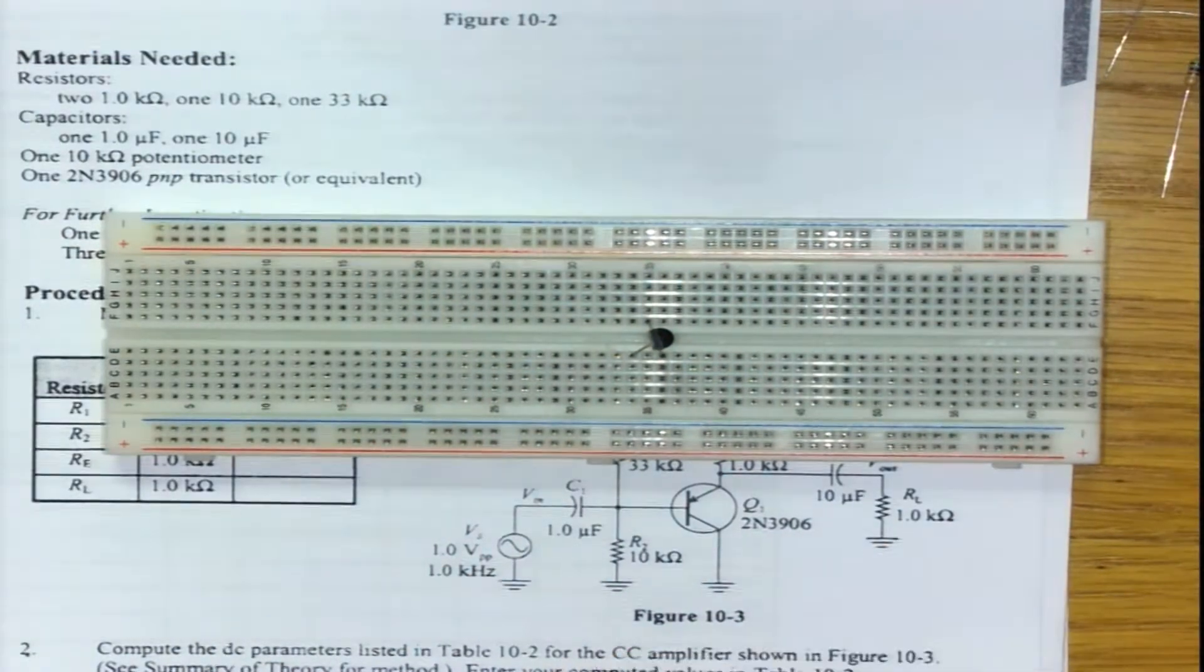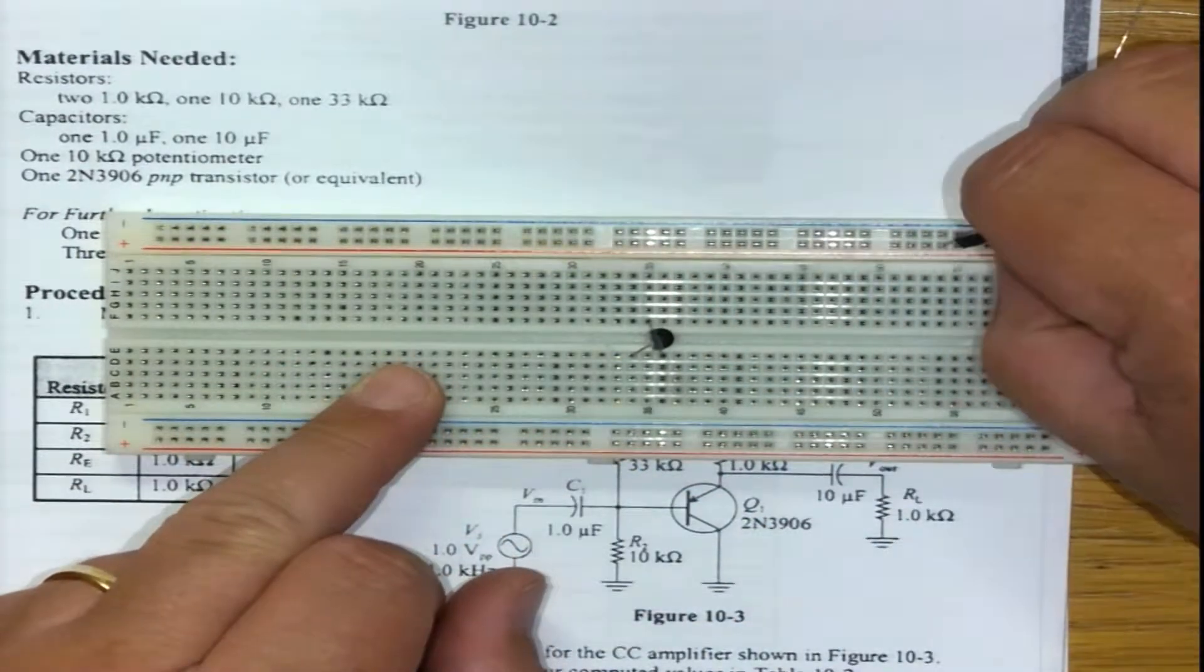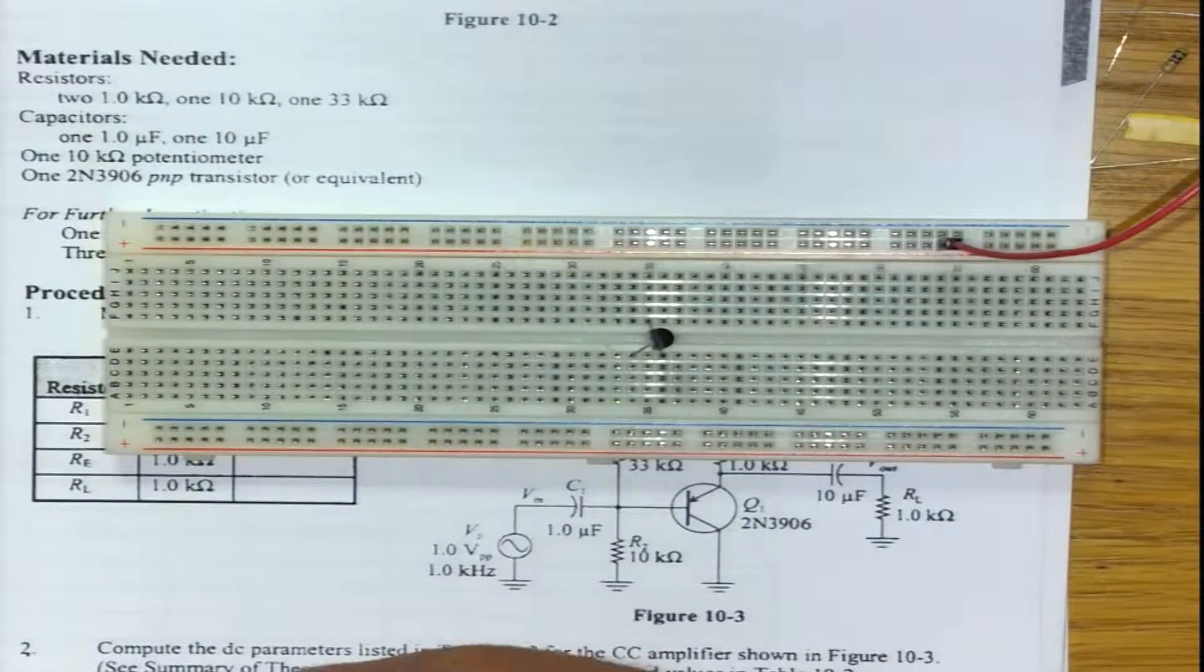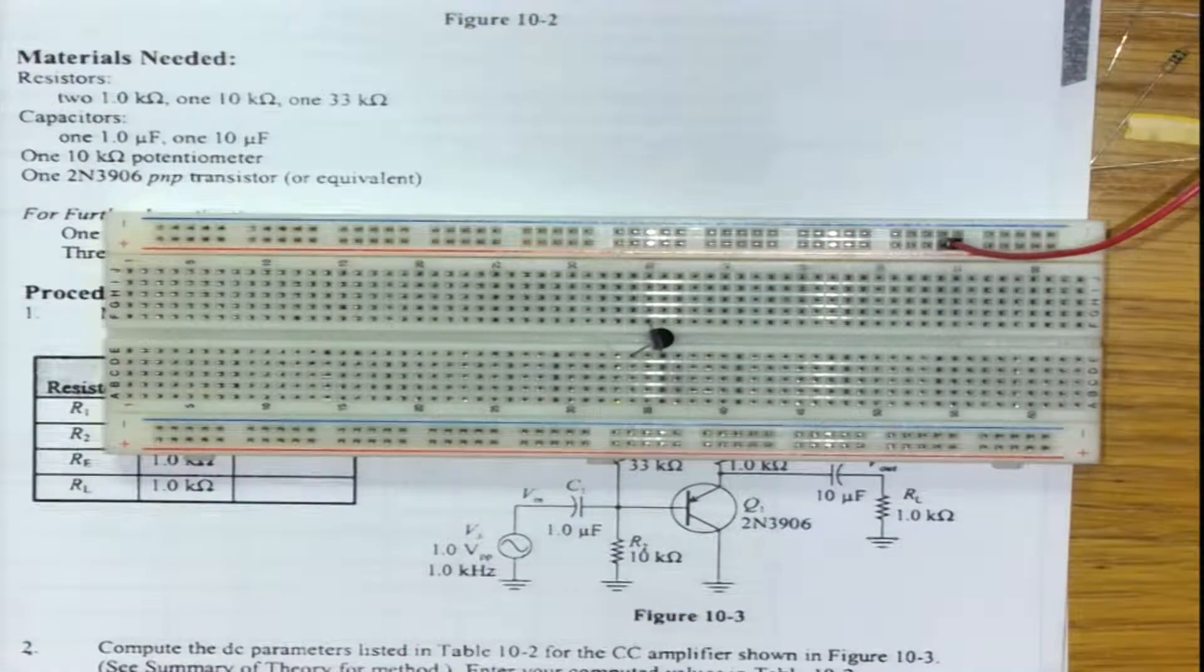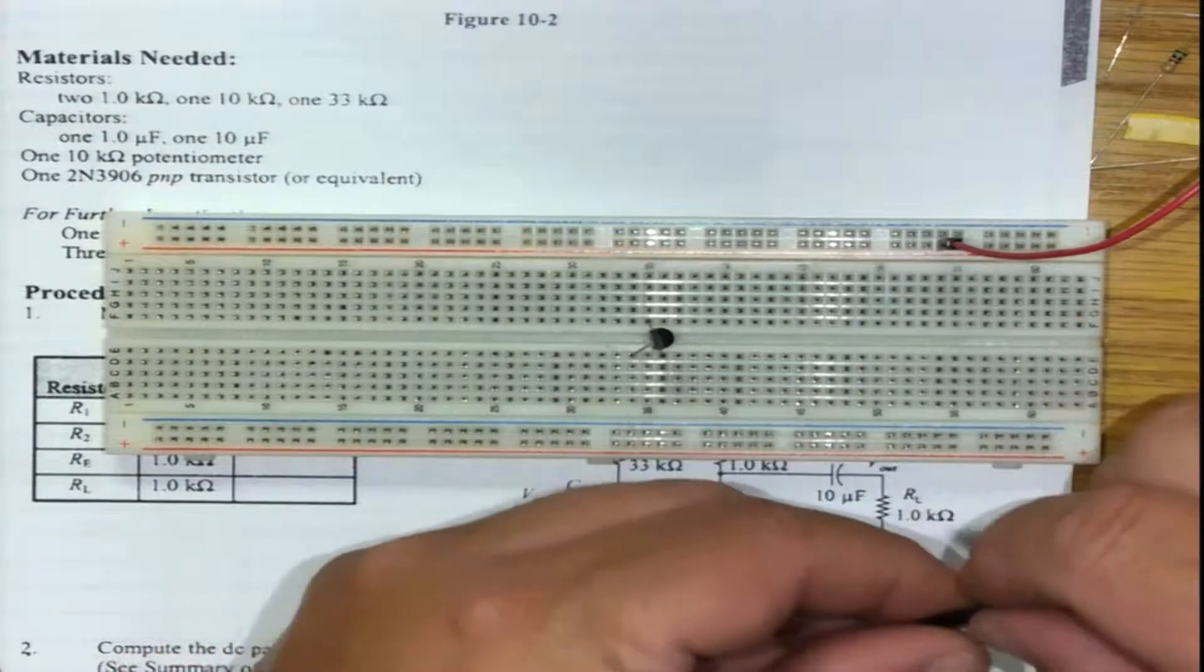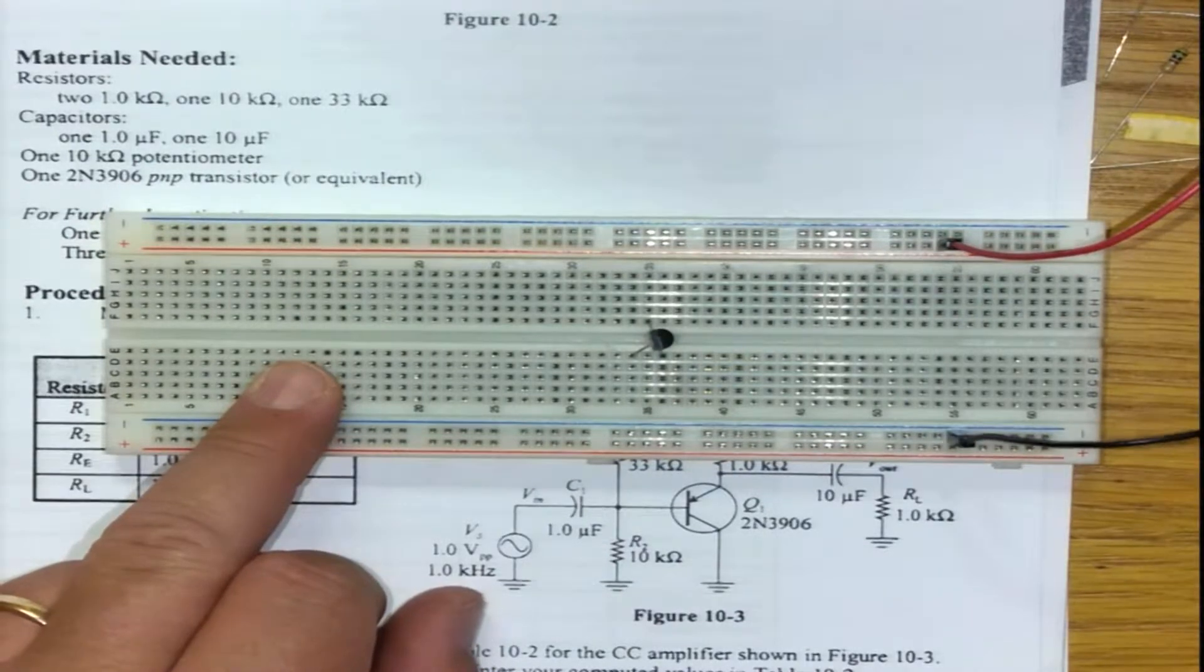Red line on top is plus, so I've got the red line going to my power supply, and we've got the blue line at the bottom—zero volts or ground common—going to the zero volts of the power supply.